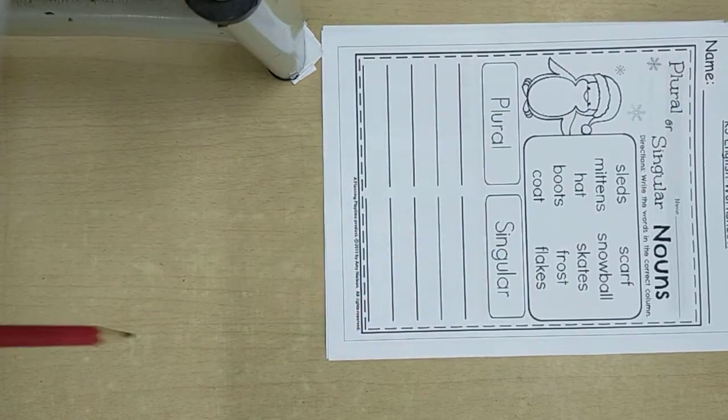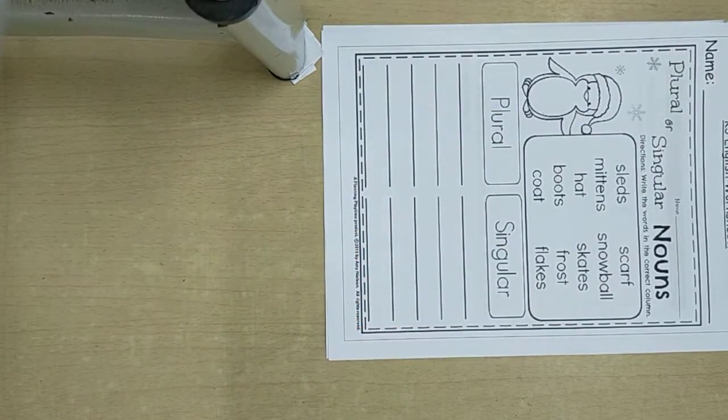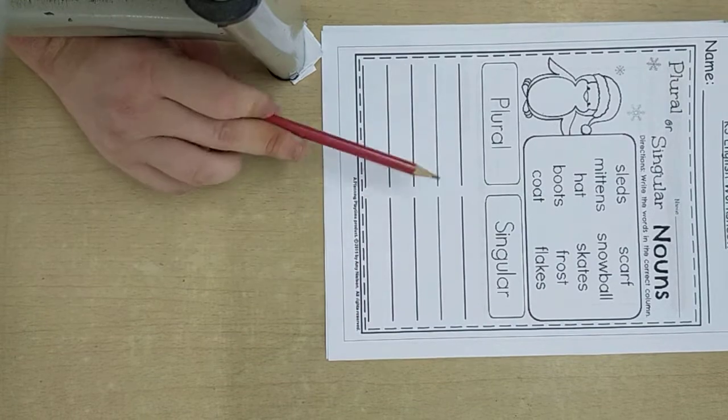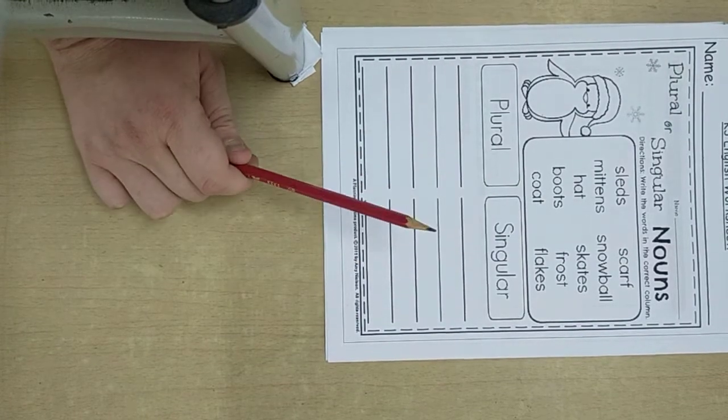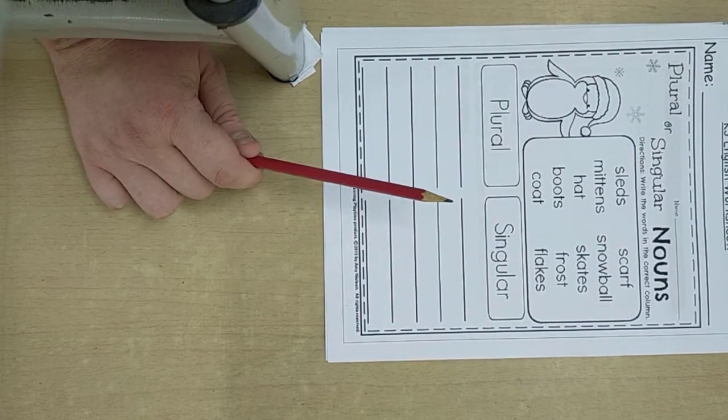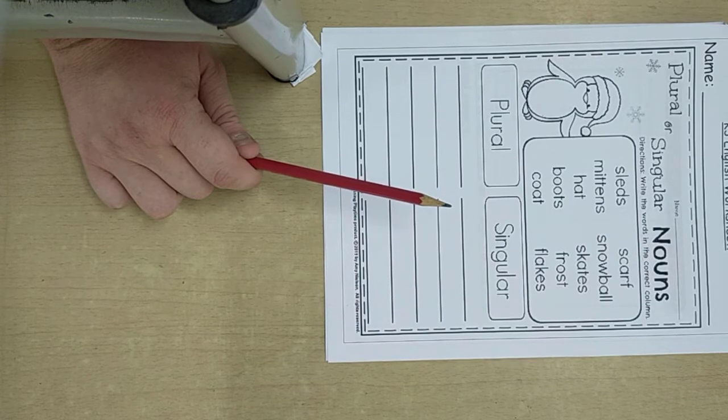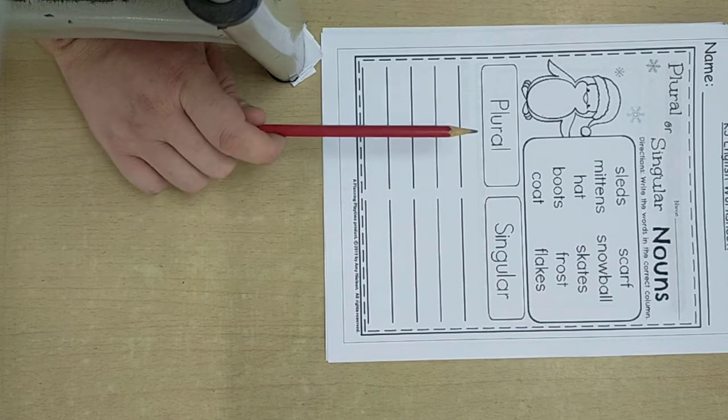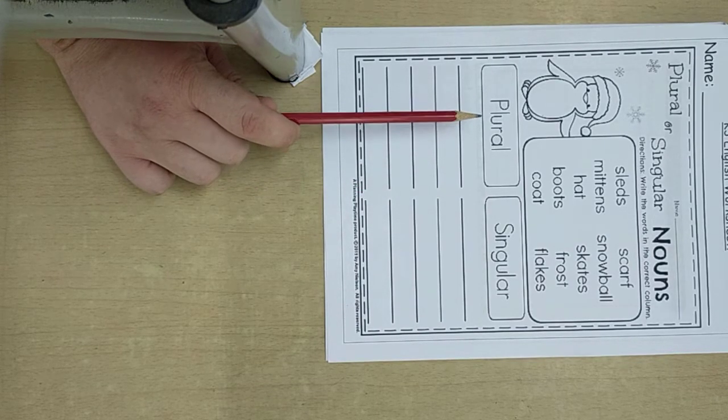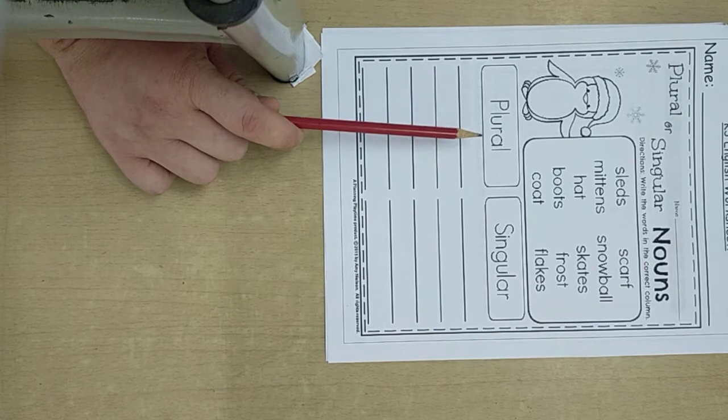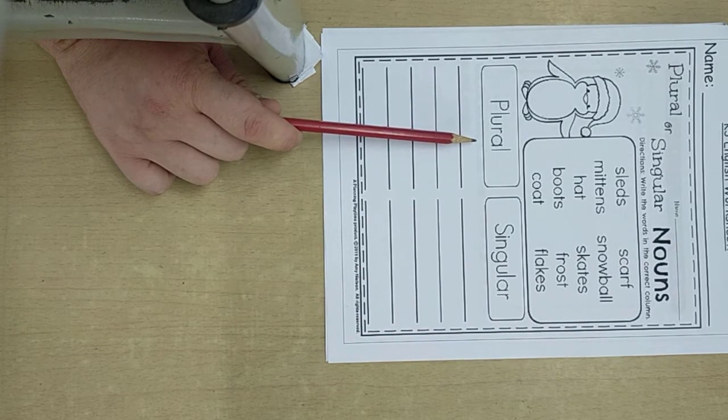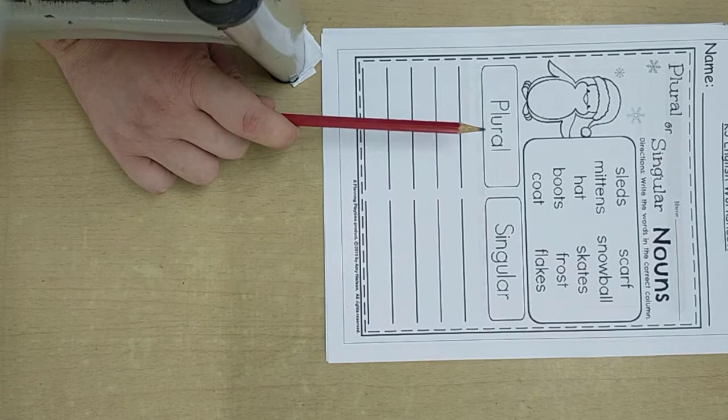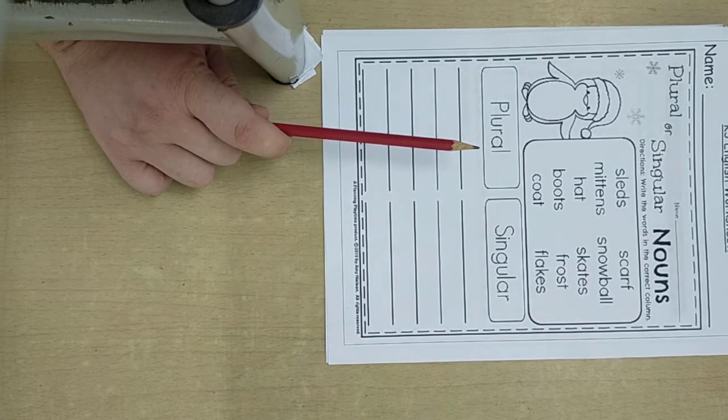Which one is more than one? Is it plural or singular? Which one is more than one person, place, animal, or thing? The plural, right? And what are we going to do with the plural words? Add a letter S at the end.